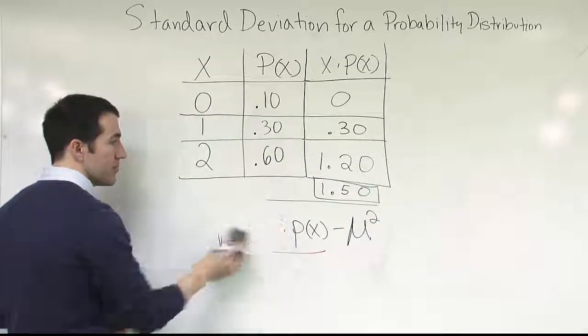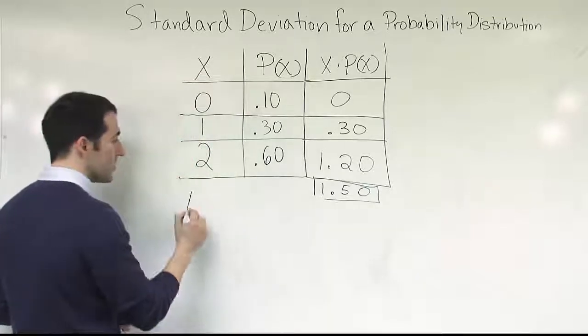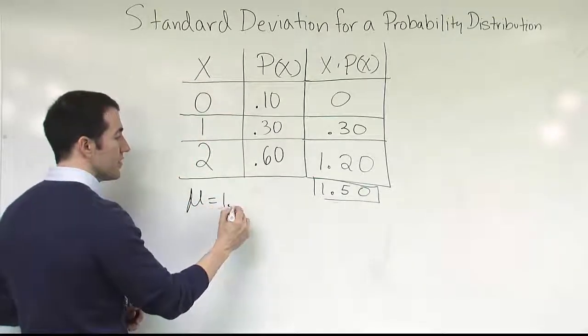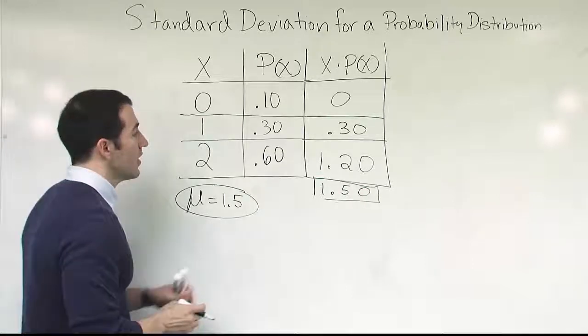That is our average then. So what we're going to say now is that our mean is 1.5. Okay, so let's just keep that off to the side here. We need that information later. We're going to use that later. All right, so we have our 1.5.